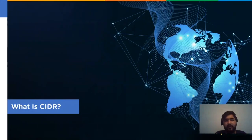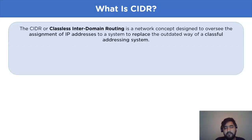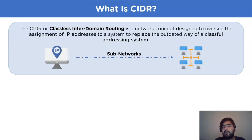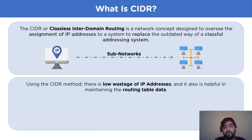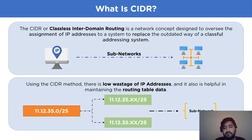Now let's take a look at the first heading: what is CIDR? CIDR, or Classless Inter-Domain Routing, is a network concept designed to oversee the assignment of IP addresses to a system, replacing the outdated classful addressing system. Furthermore, using the CIDR method there is low wastage of IP addresses, and it is also helpful in maintaining the routing table and performs the task of subnetting, which saves a lot of IP addresses.